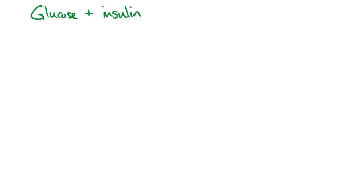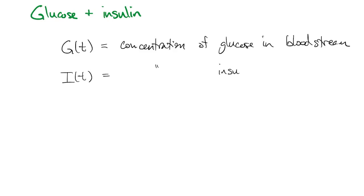Here's another example, just considering the interactions of glucose and insulin in the body. And we'll let g of t be the concentration of glucose in the bloodstream of a person. And i of t is the concentration of insulin in the same person.